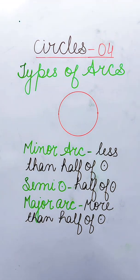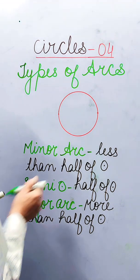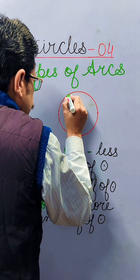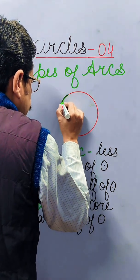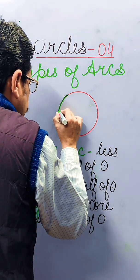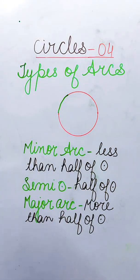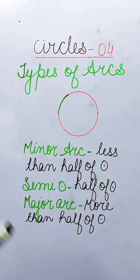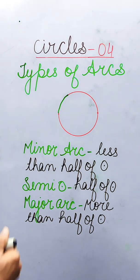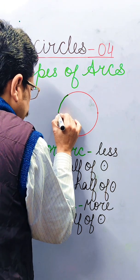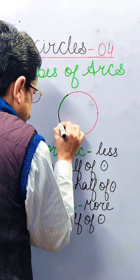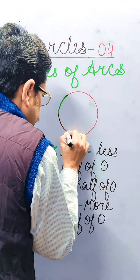Let us see in the figure. This green part represents minor arc and the remaining red part represents major arc. This black part represents semicircle.